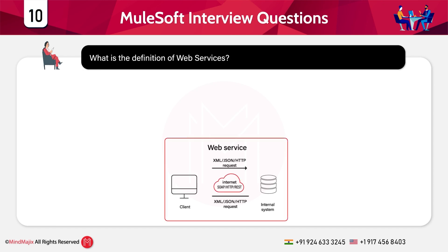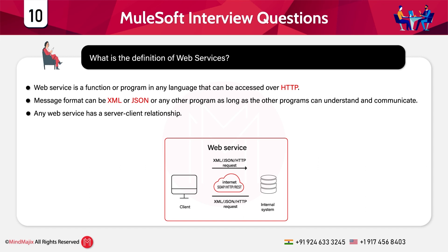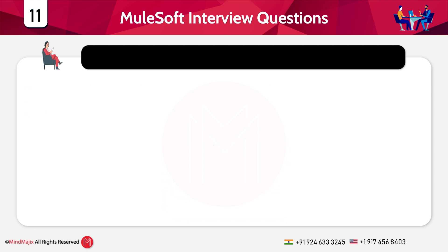What is the definition of web services? A web service is a function or program that can be written in any language and accessed over HTTP. The message format for web services can be either XML or JSON, as long as other programs are able to understand and communicate. Any web service has a client-service relationship, and web services can be synchronous or asynchronous and can have multiple clients.